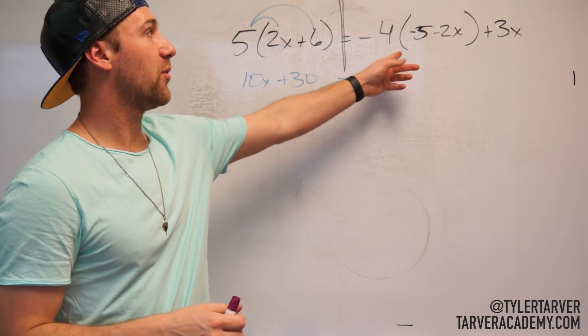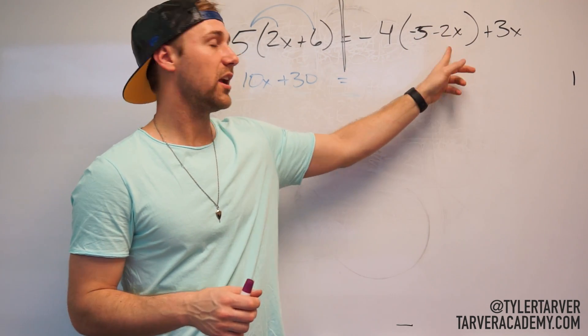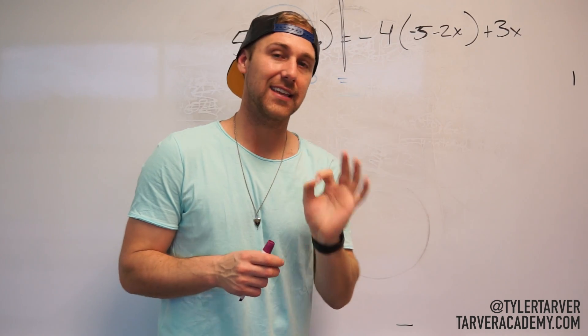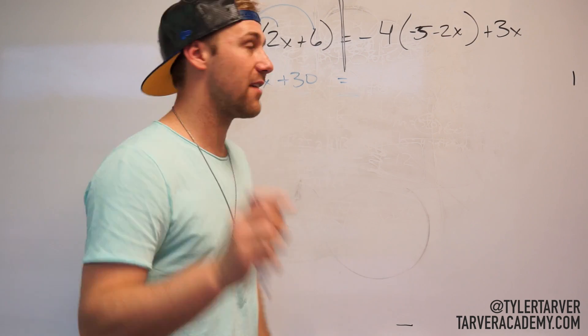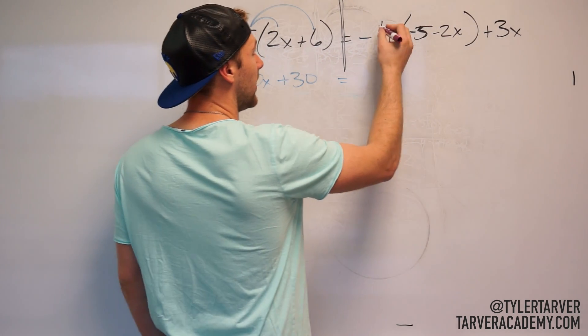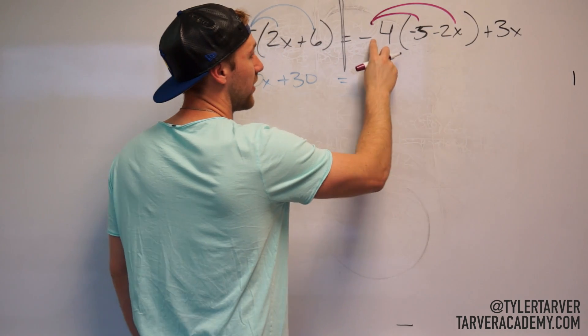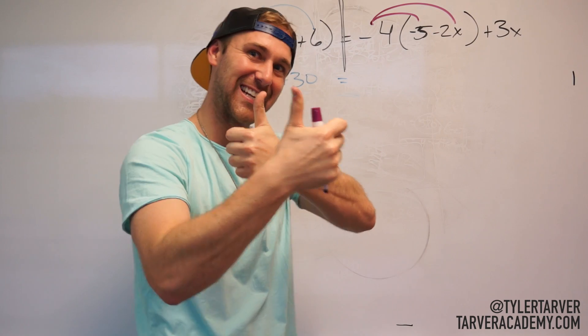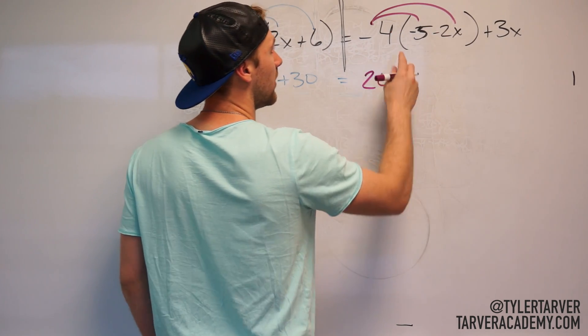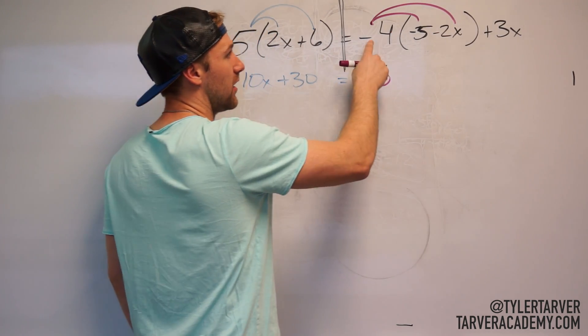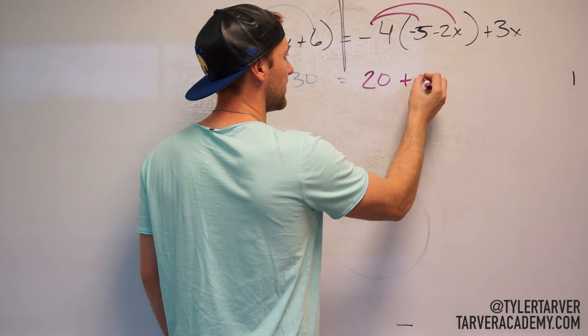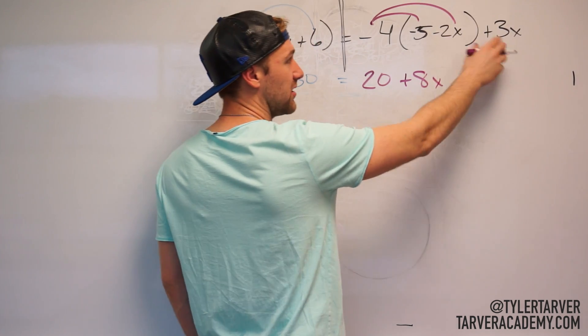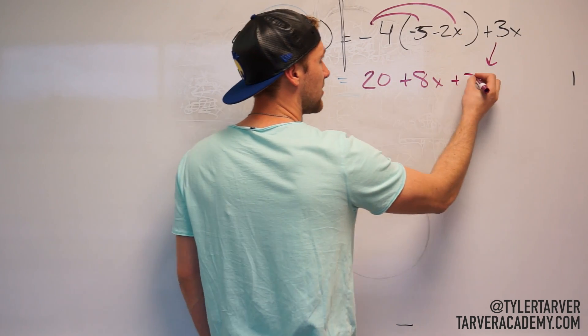All right? Same thing here. I've got negative 4 and I'm going to have to distribute it here and here. The difference with this one is that's a negative 4. Do not forget to take that negative with that 4. They are best friends forever. So you will take that with it and distribute it there and distribute it there. So negative 4 times negative 5. Negative times a negative equals a positive. So that's going to be positive 20. Negative 4 times negative 2x, which is positive 8x. Boom! Then I just bring this down. It doesn't get distributed to because it's not in the parentheses plus 3x.